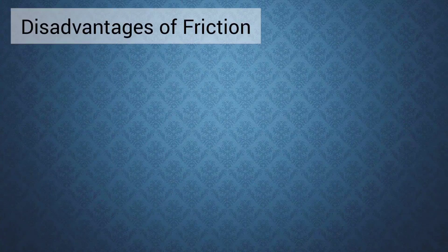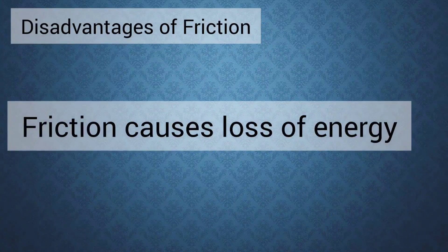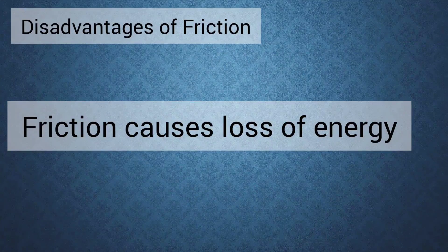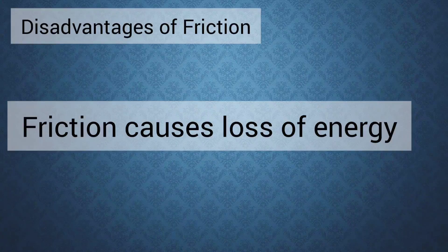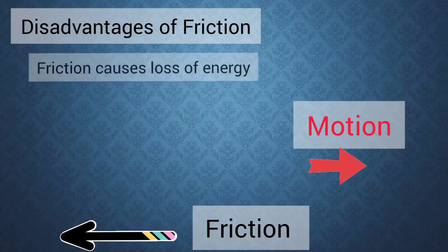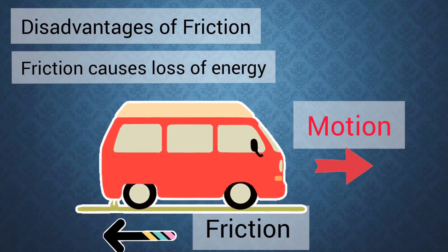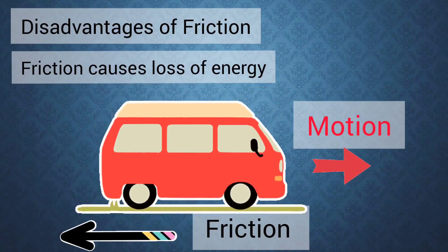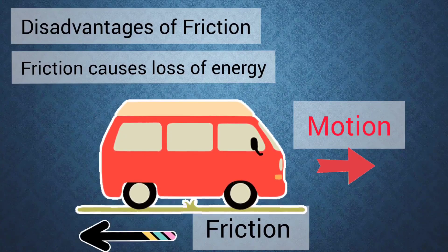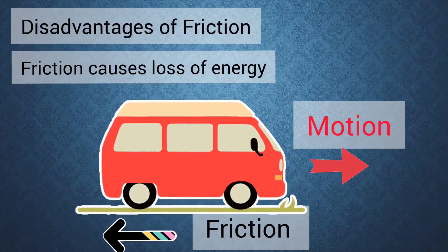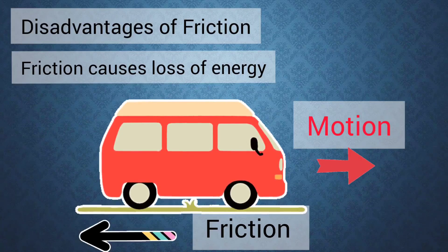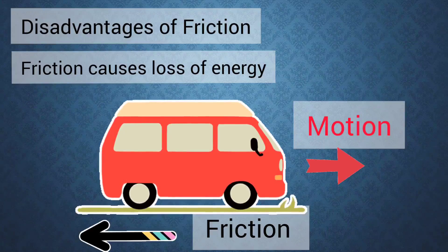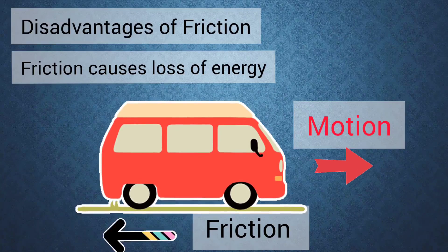Friction causes loss of energy and also consumption of more fuels. Students, you know that friction always opposes the relative motion between any two objects in contact. Right? Therefore extra energy is spent in overcoming friction. Thus friction involves an expense of energy.